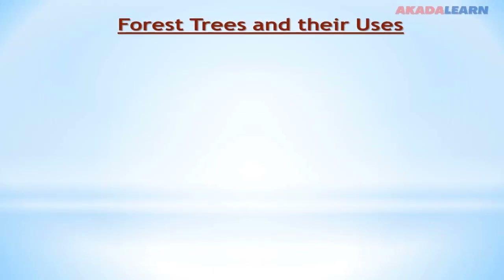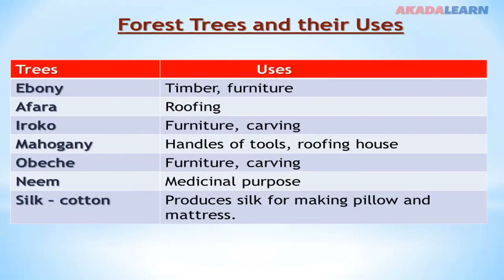Forest trees and their uses: we have ebony, used for furniture; afara for roofing; iroko for furniture and carving; mahogany can be used for handles of tools and also for roofing; mopeiche can be used for furniture and carving; neem tree can be used for medicinal purposes; while silk cotton can be used to produce silk for making pillows and mattresses.